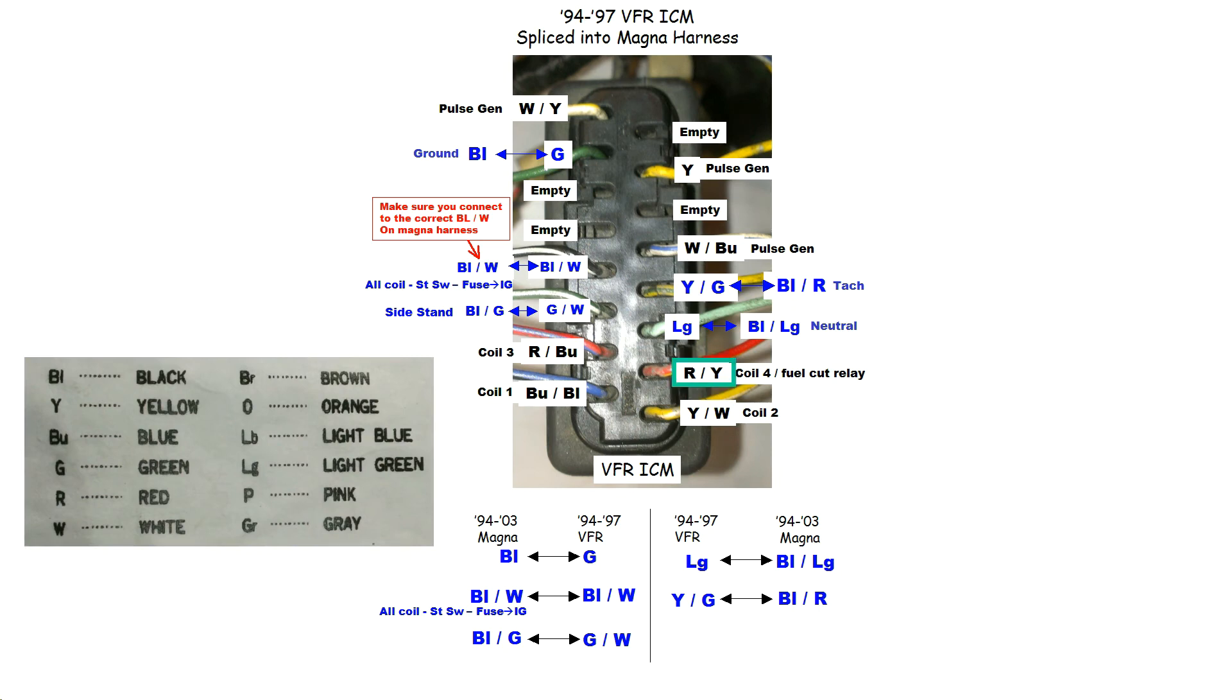LG is just light green. R, Y will be a red wire with a yellow stripe. Sometimes it's difficult to tell which is the stripe and which is the color of the wire, but for the most part, the first color is the primary color of the wire, and the second color will be a stripe.